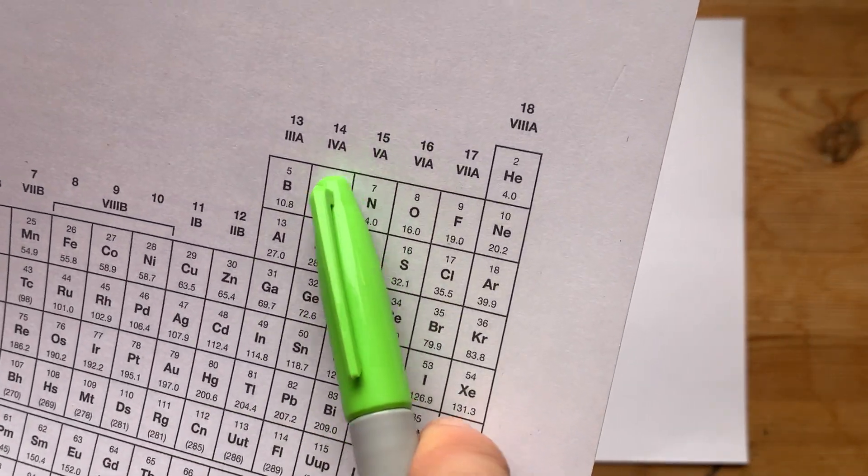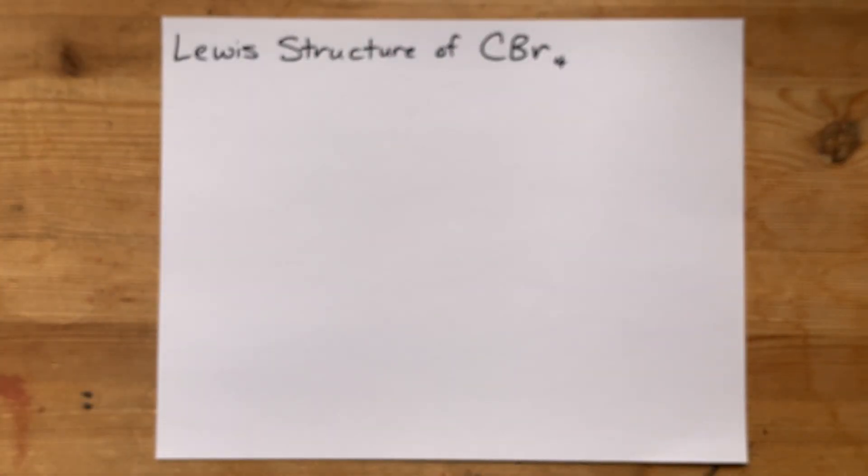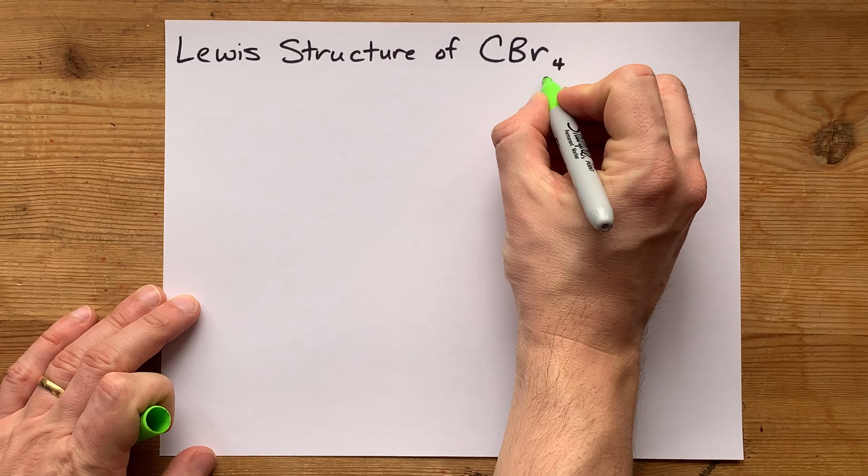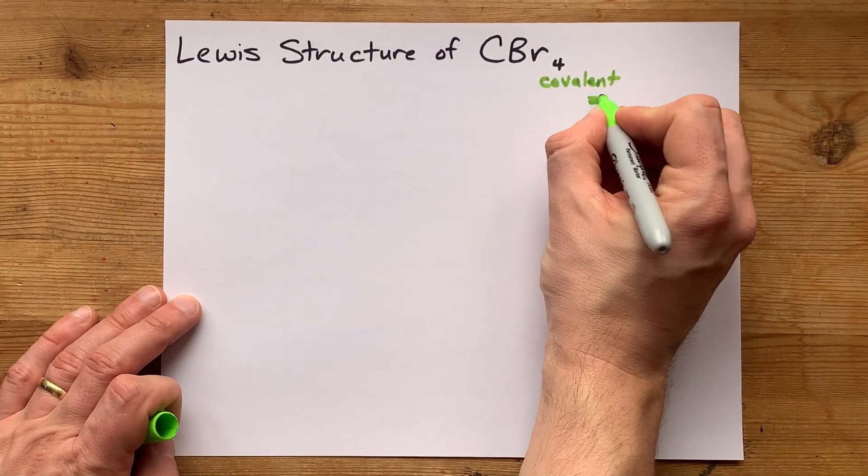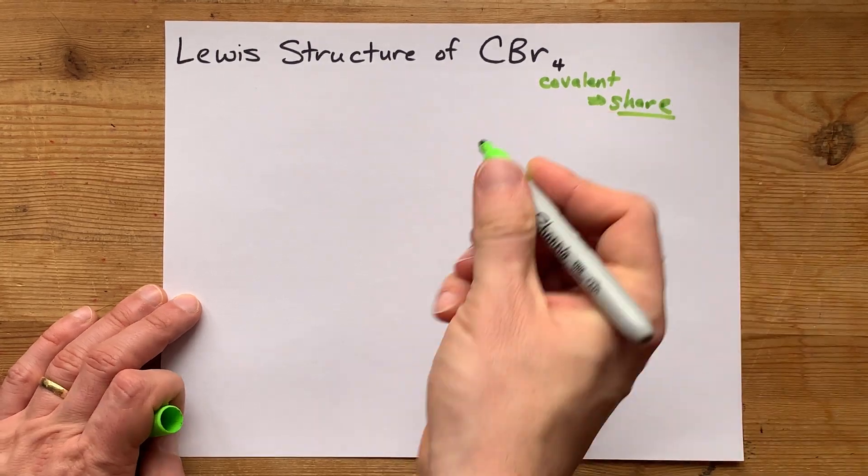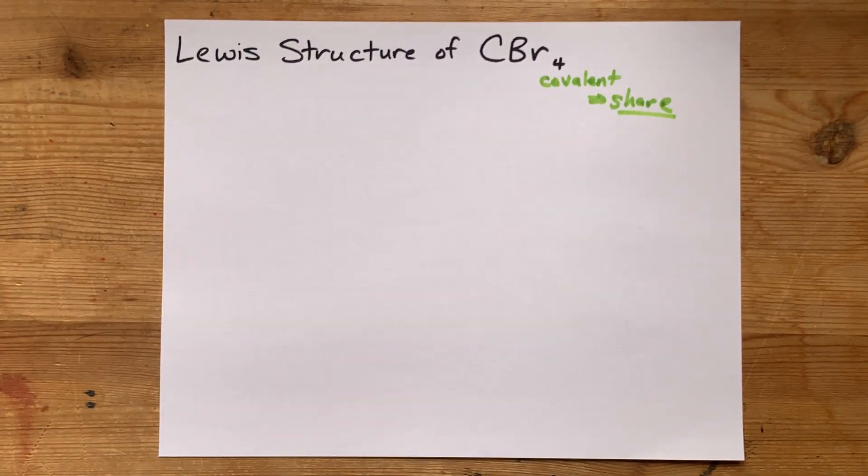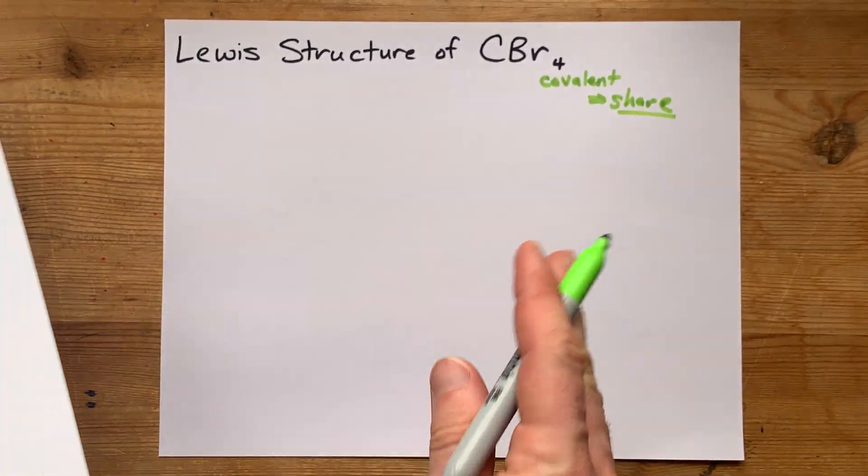What matters is that carbon and bromine are both non-metals from the right side of the periodic table. That means it's a covalent or molecular compound, and there's going to be a sharing of electrons, not a transfer from one to the other. So no arrows here, instead just sharing of electrons.